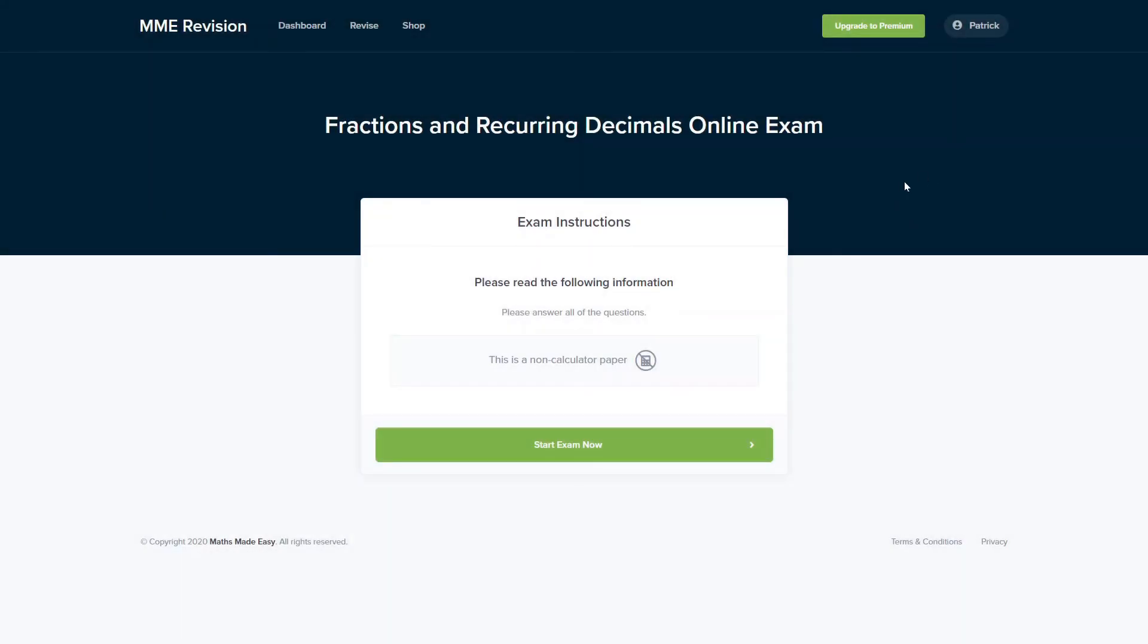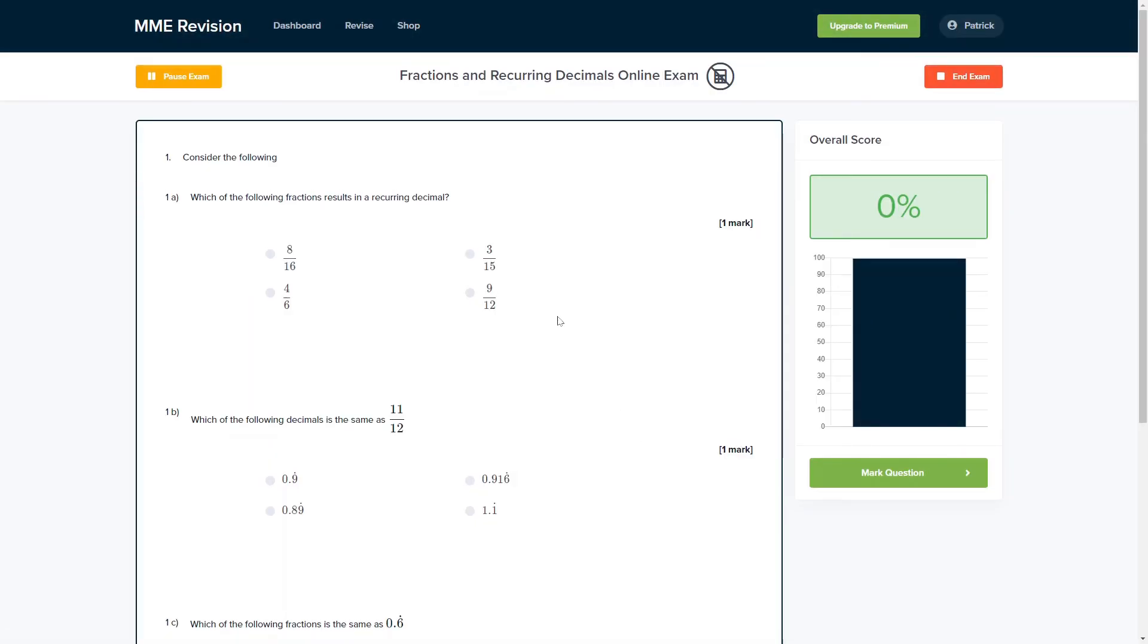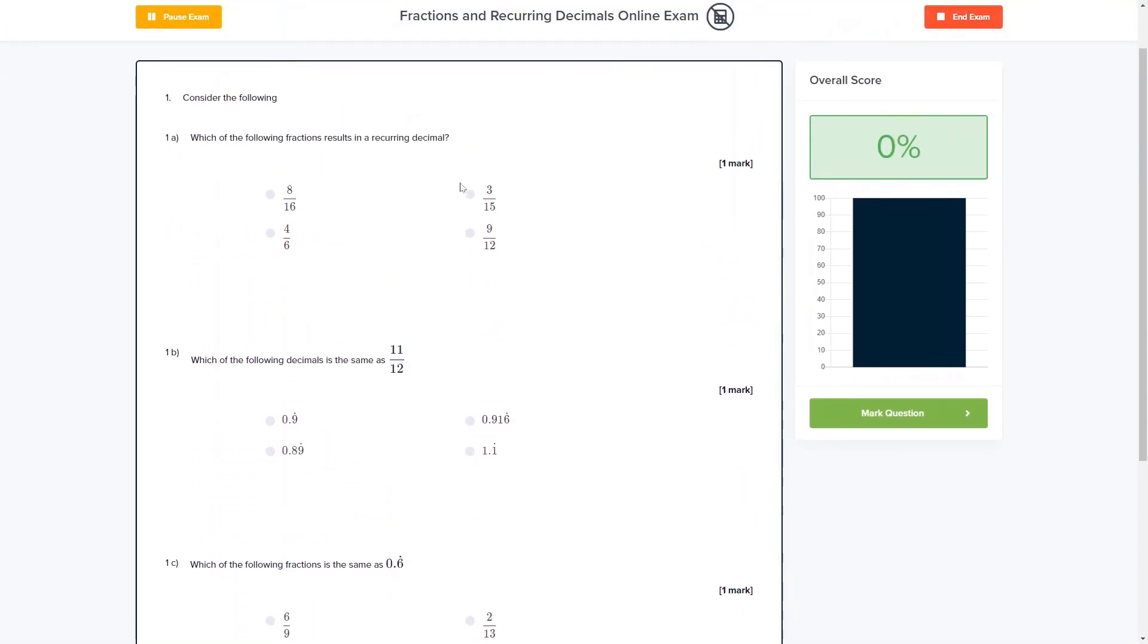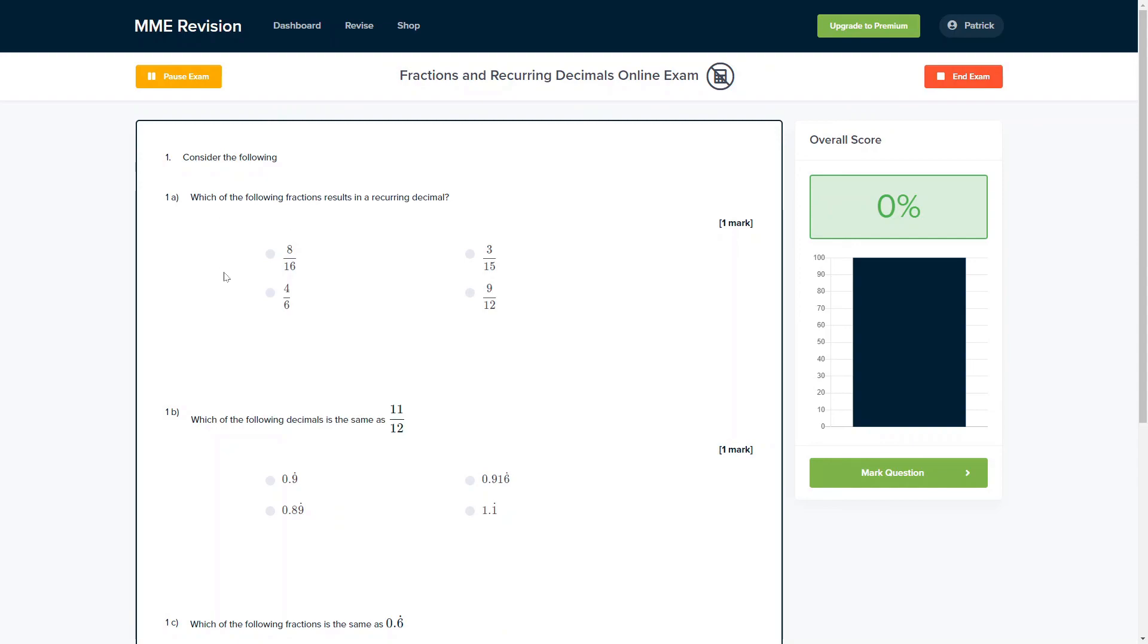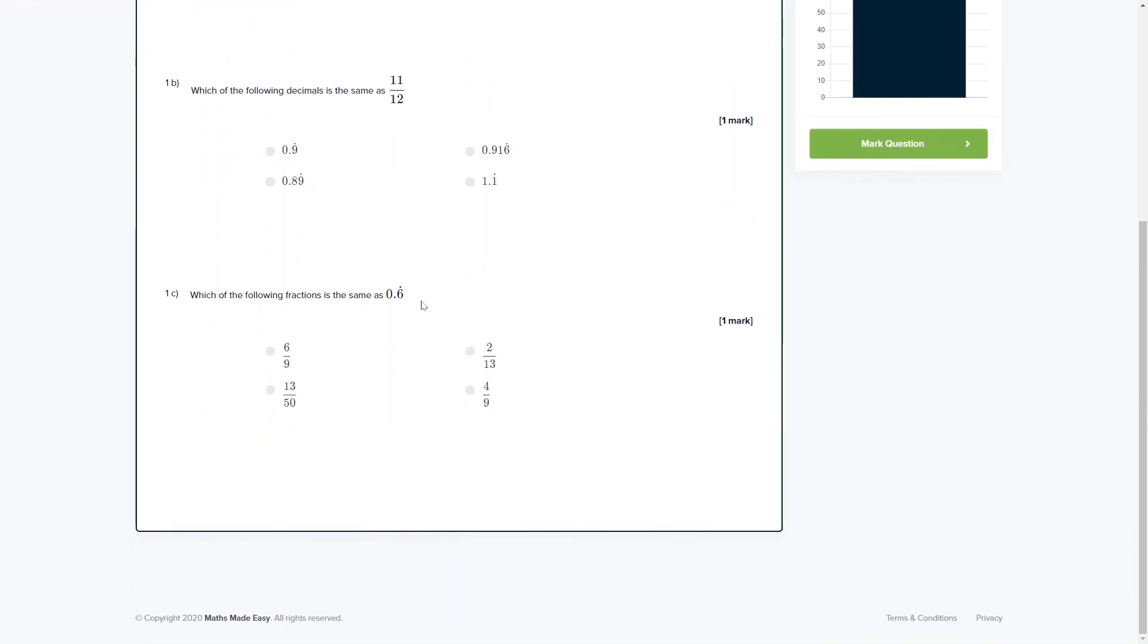If you'd like to get some practice in with fractions and recurring decimals, you can do so with our online exam. This is available through our revision platform. If you take the test, you'll find loads of different questions to have a go at, and you'll get instant feedback on all of them. So it's a really good way of keeping track of your progress, finding out where you're going wrong, and how you can improve. If this is something you're interested in, you can click the link below and it'll take you straight over there.